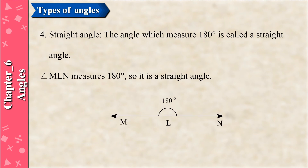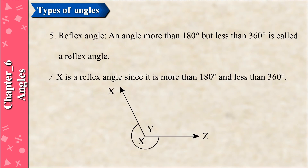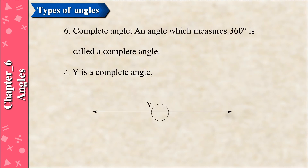Straight Angle: The angle which measures 180 degrees is called a straight angle. Angle MLN measures 180 degrees, so it is a straight angle. Reflex Angle: An angle more than 180 degrees but less than 360 degrees is called a reflex angle. Angle X is a reflex angle since it is more than 180 degrees and less than 360 degrees. Complete Angle: An angle which measures 360 degrees is called a complete angle. Angle Y is a complete angle.